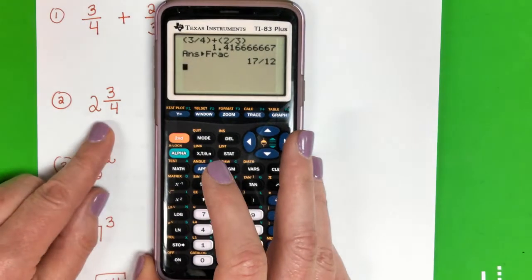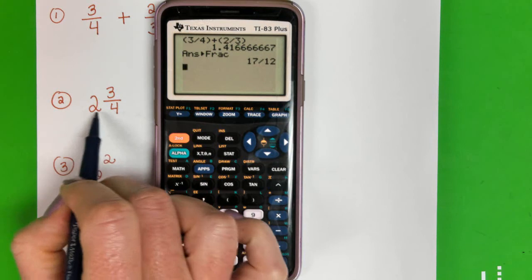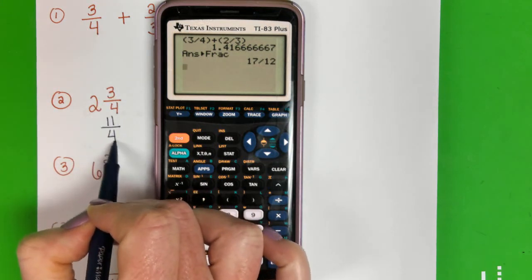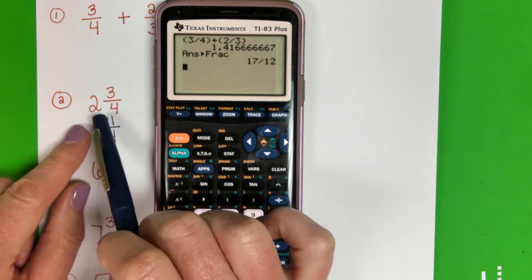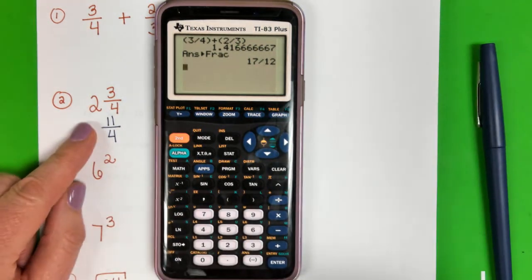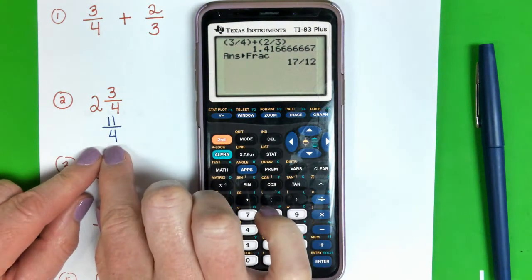Okay, and something else I want you to see. If we have a mixed number like 2 and 3/4 in an improper fraction, this would be 11/4. Okay, we can't type this in as 2 and 3/4 into our calculator—it isn't going to work.